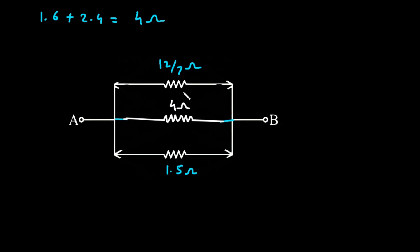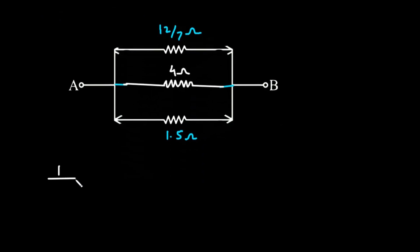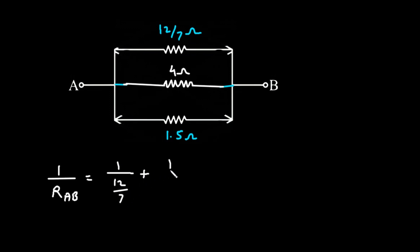Now, here we can clearly see all the resistances are connected in parallel. So therefore, 1 upon RAB is equal to 1 upon (12/7) plus 1 upon 4 plus 1 upon 1.5.